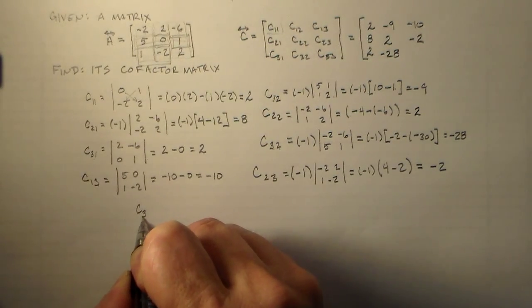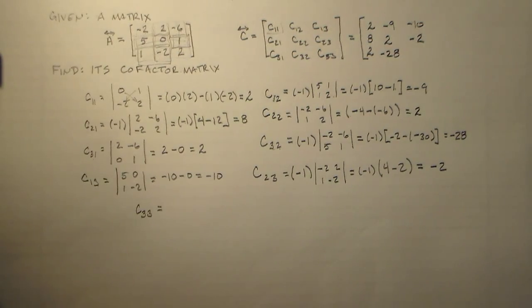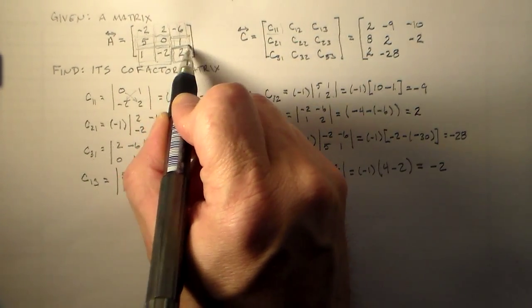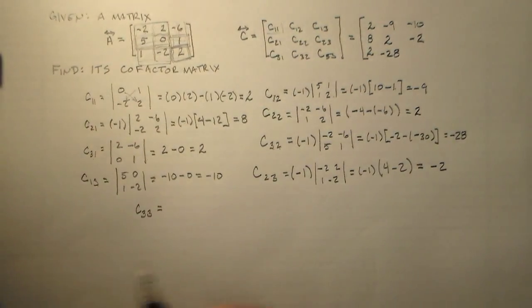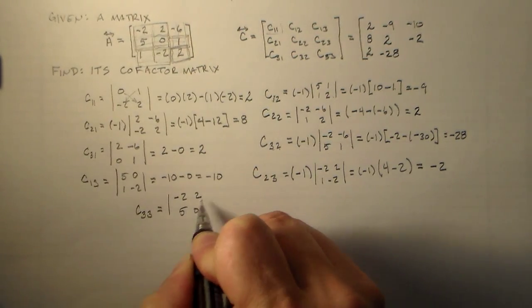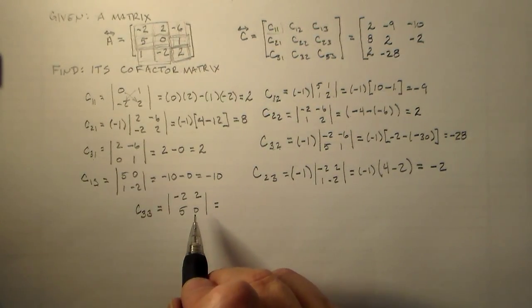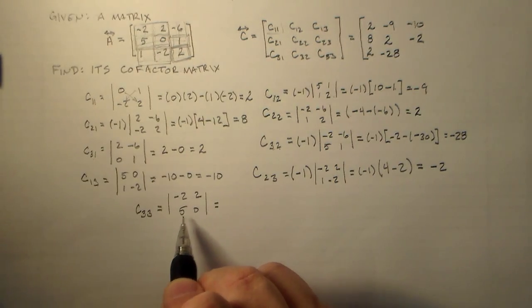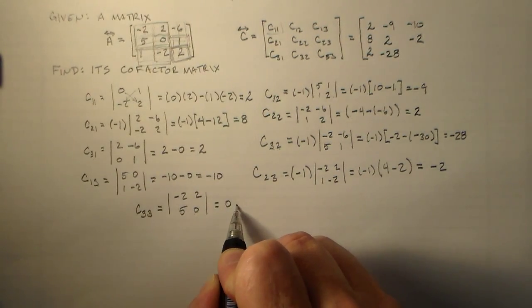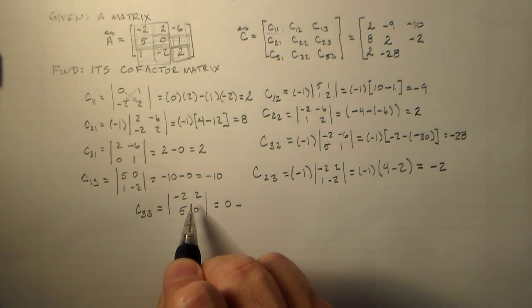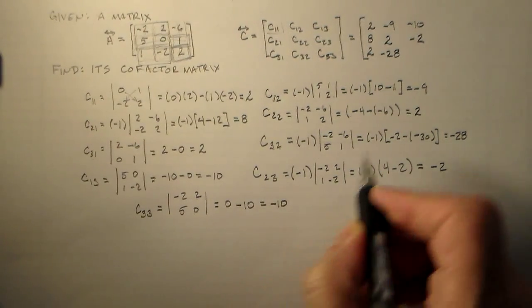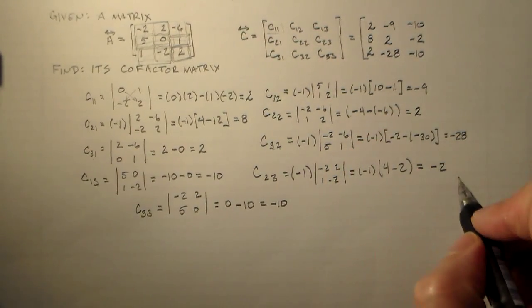And then the one you've been waiting for, C33. I know you've been waiting in anticipation. So C33. We have this guy. We want you to use this submatrix. So we have, what, minus 2, 2, 5, 0. And if we have minus 2, 2, 5, 0, we have minus 2 times 0 is 0. Minus, 2 times 5 is 10, which is equal to minus 10. So, there we go. Another minus 10.